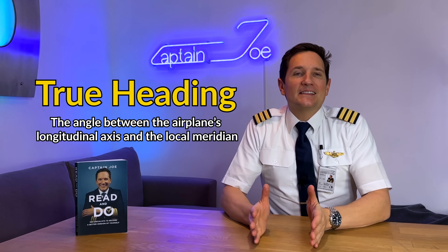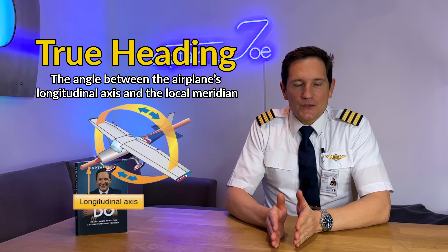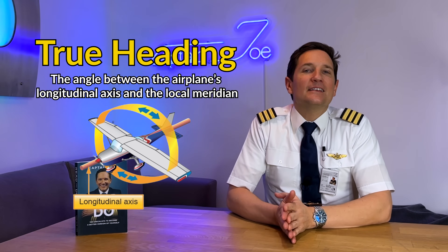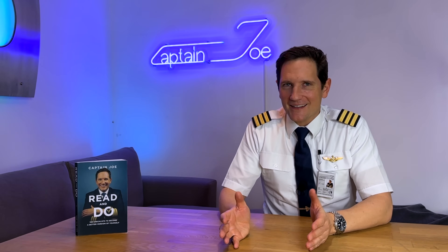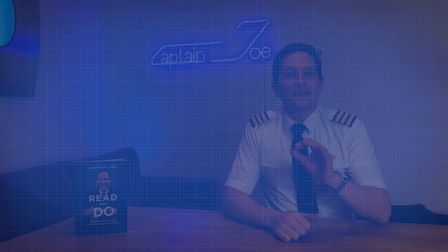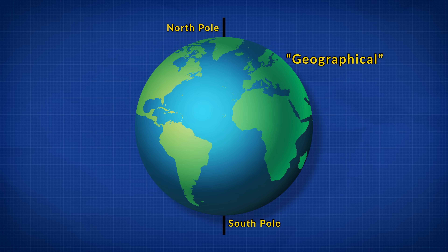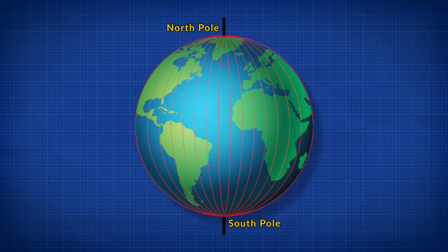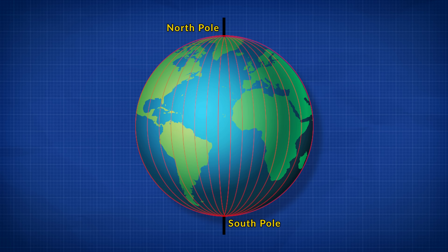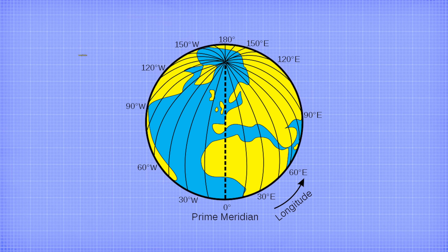Per definition, the true heading is the angle between your airplane's longitudinal axis and the local meridian. A meridian is basically the shortest connection between the Earth's geographical north and south pole. The Earth's coordinate system is divided into 360 degrees, giving you 360 meridians all going through both poles — though you can draw many more in between.